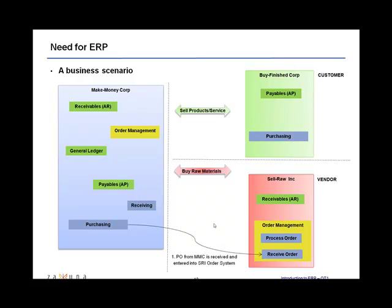Make Money Corp is in the process of buying raw materials and creating a product from them. The purchasing department of Make Money Corp creates a purchase order based on what they need and sends it to the vendor, Sell Raw Ink. When the PO is received by the vendor, it is entered into their order management system — the PO document created in one organization becomes a sales order on the receiving end.